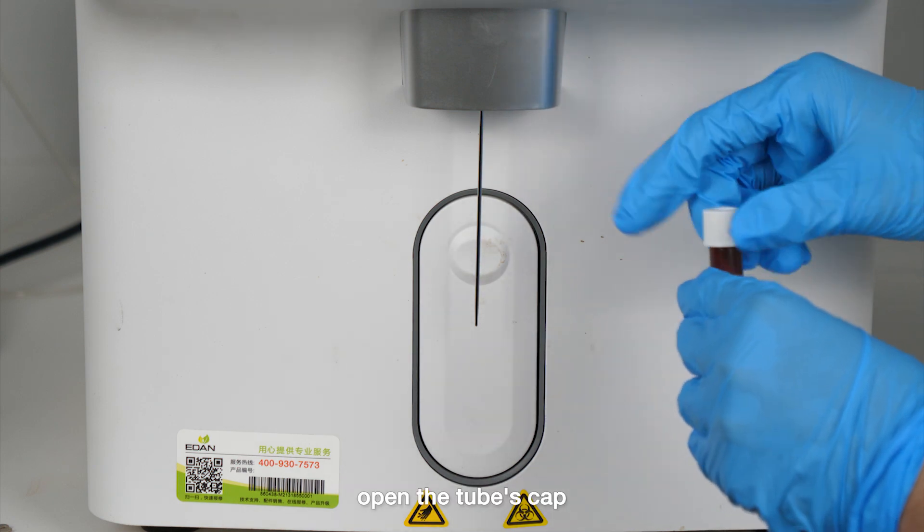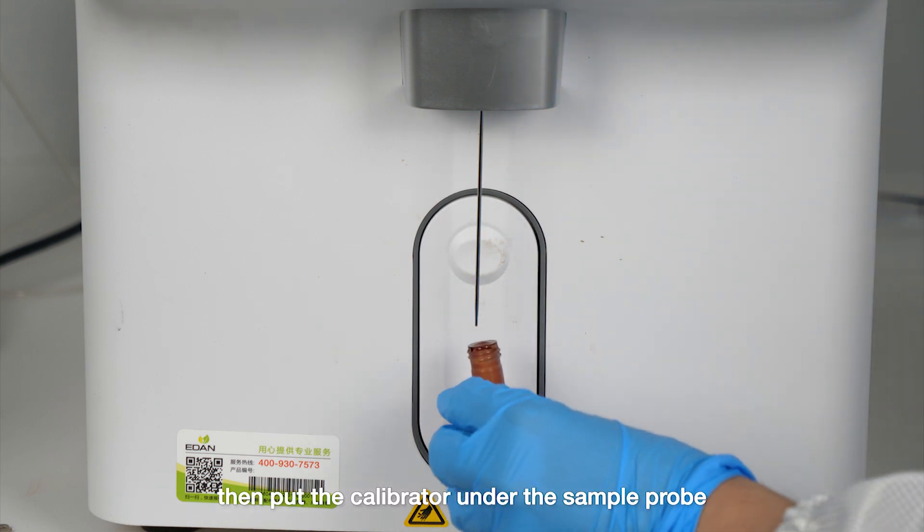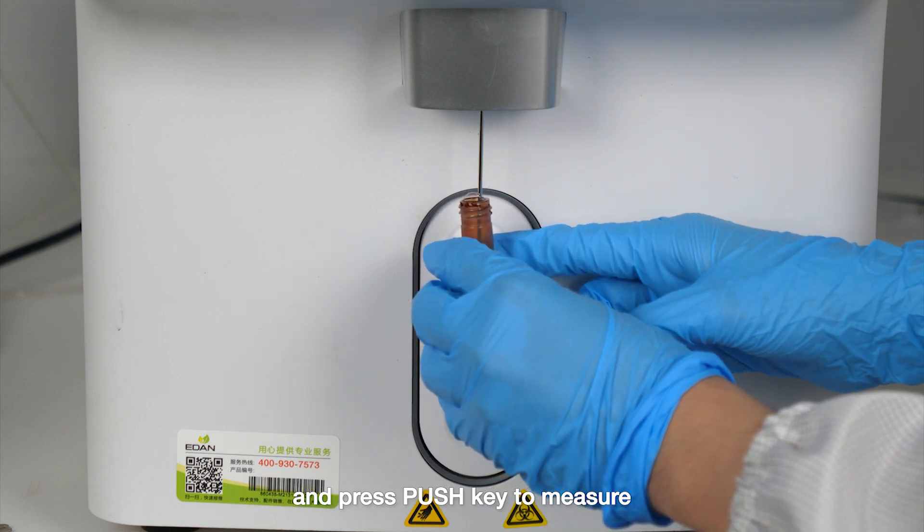Open the tube's cap, then put the calibrator under the sample probe and press the push key to measure.